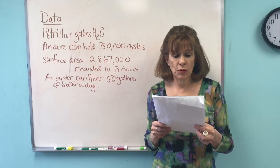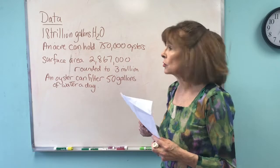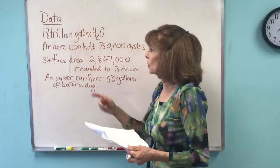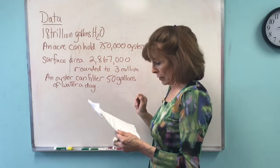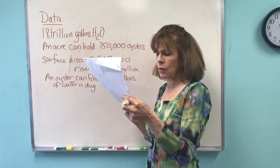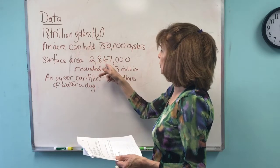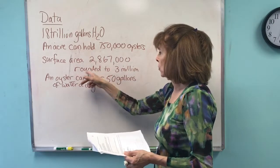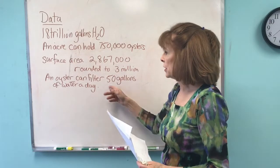Can there be enough oysters to filter the whole Chesapeake in one day? I did some research and found out it's actually closer to 18 trillion gallons of water, so I'm using 18 trillion. I also looked up that the surface area is 4,480 square miles, which is 2,867,200 acres, and I rounded that to 3 million acres. An oyster can filter 50 gallons of water a day.